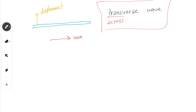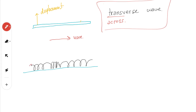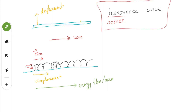To distinguish between transverse waves and the other type, we use another example: a spring or slinky. In this case, the hand on the left side applies the force directly to the right, and the displacement is also going to the right. When the energy flow is parallel to that displacement, we call this type of wave a longitudinal wave. A clever way to remember this is the word 'along' — the displacement is along the wave.